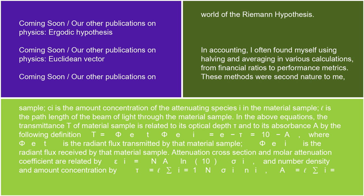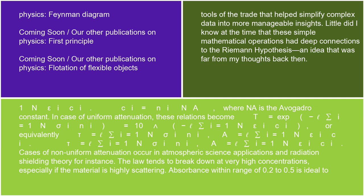Attenuation cross-section and molar attenuation coefficient are related by εᵢ = N_A·ln(10)·σᵢ, and number density and amount concentration by cᵢ = nᵢ/N_A, where N_A is the Avogadro constant. In case of uniform attenuation, these relations become T = exp(−Σᵢ σᵢ nᵢ ℓ) = 10^(−Σᵢ εᵢ cᵢ ℓ), or equivalently τ = Σᵢ σᵢ nᵢ ℓ = Σᵢ εᵢ cᵢ ℓ.